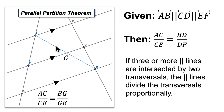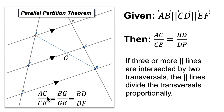We've got another triangle on the other side. Applying the side splitter theorem again — this segment is parallel to the base of that triangle — so BG to GE equals the ratio of BD to DF. Both AC over CE and BD over DF equal BG over GE. By the transitive property or substitution, AC over CE equals BD over DF. The parallel partition theorem is built on the side splitter theorem, which is built on parallel lines, corresponding congruent angles, and similar triangles — they're all connected.